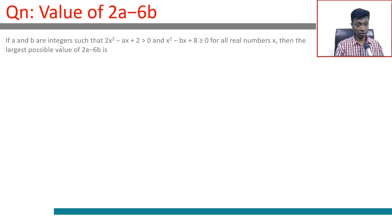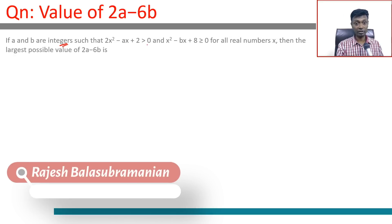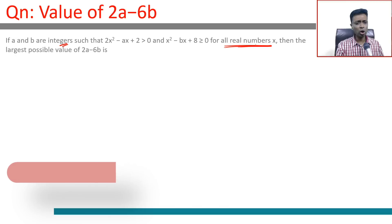If a and b are integers such that 2x² - ax + 2 > 0 and x² - bx + 8 ≥ 0 for all real numbers x (very vital point - this is always greater than 0), then find the largest possible value of 2a - 6b.